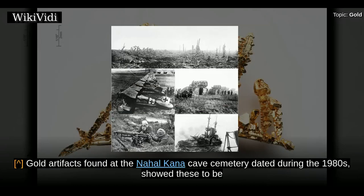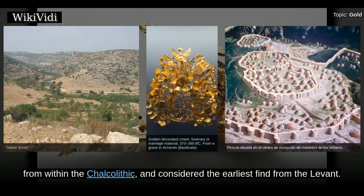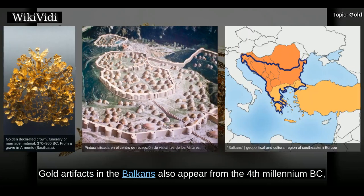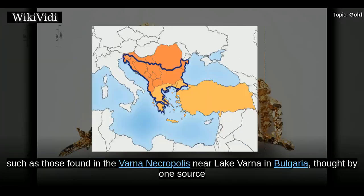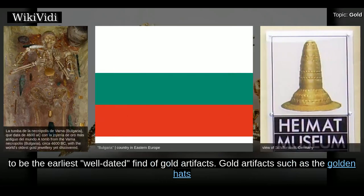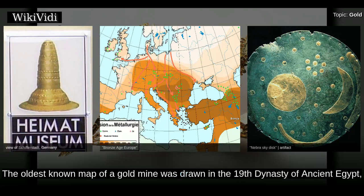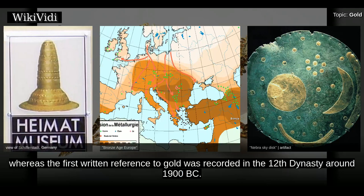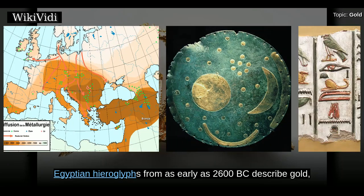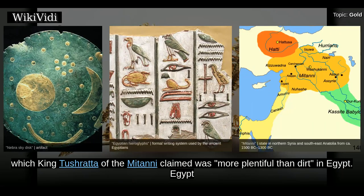Gold artifacts found at the Nahal Qana Cave Cemetery dated during the 1980s showed these to be from within the Chalcolithic period and are considered the earliest find from the Levant. Gold artifacts in the Balkans also appear from the 4th millennium BC. The oldest known map of a gold mine was drawn in the 19th dynasty of ancient Egypt. Egyptian hieroglyphs from as early as 2600 BC describe gold, which King Tushratta of the Mitanni claimed was more plentiful than dirt in Egypt.